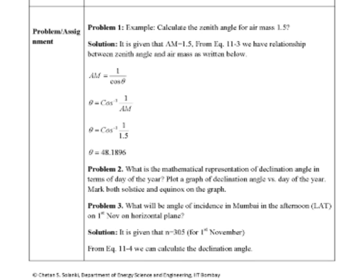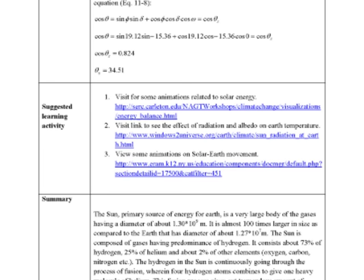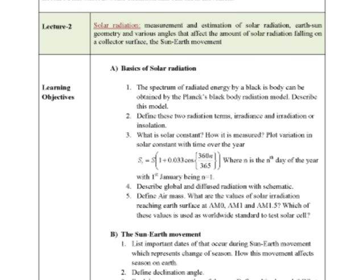The file also includes solved problems — for example, a problem to calculate the zenith angle for air mass 1.5. You can read more; there are animations on websites and you can read from the book. The summary is also included. I have put a lot of effort to prepare materials for all the lectures so that when you teach this course, you can use these learning objective sheets to plan and deliver your lecture. All the sheets are available. Now let me go directly to the presentation.